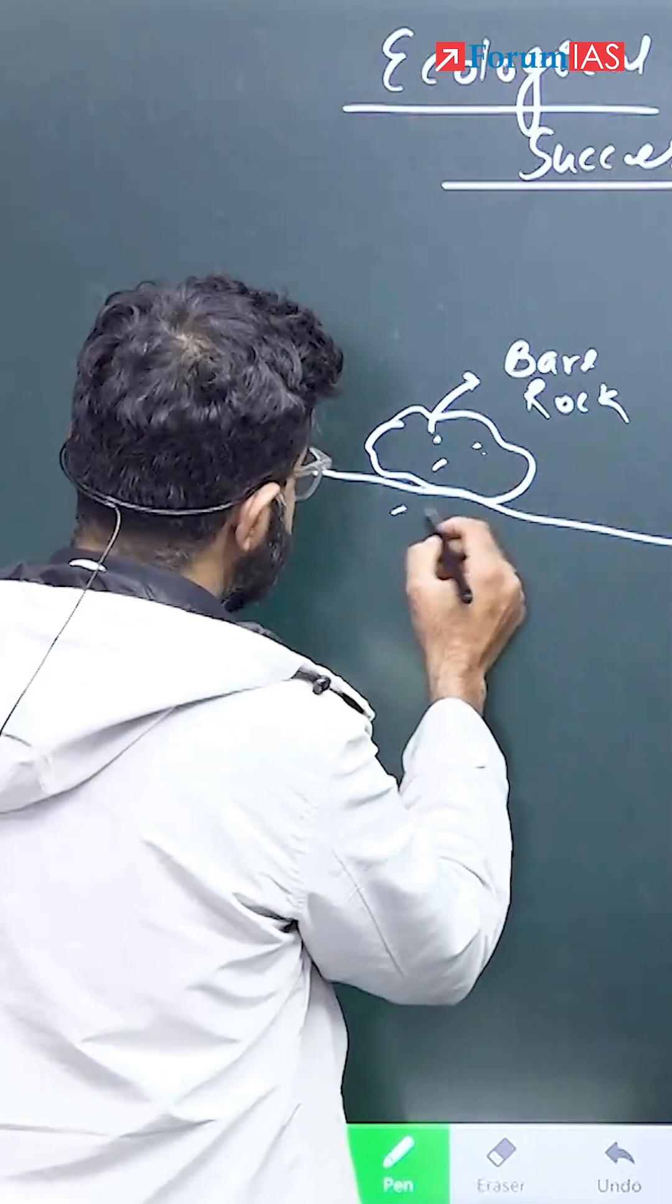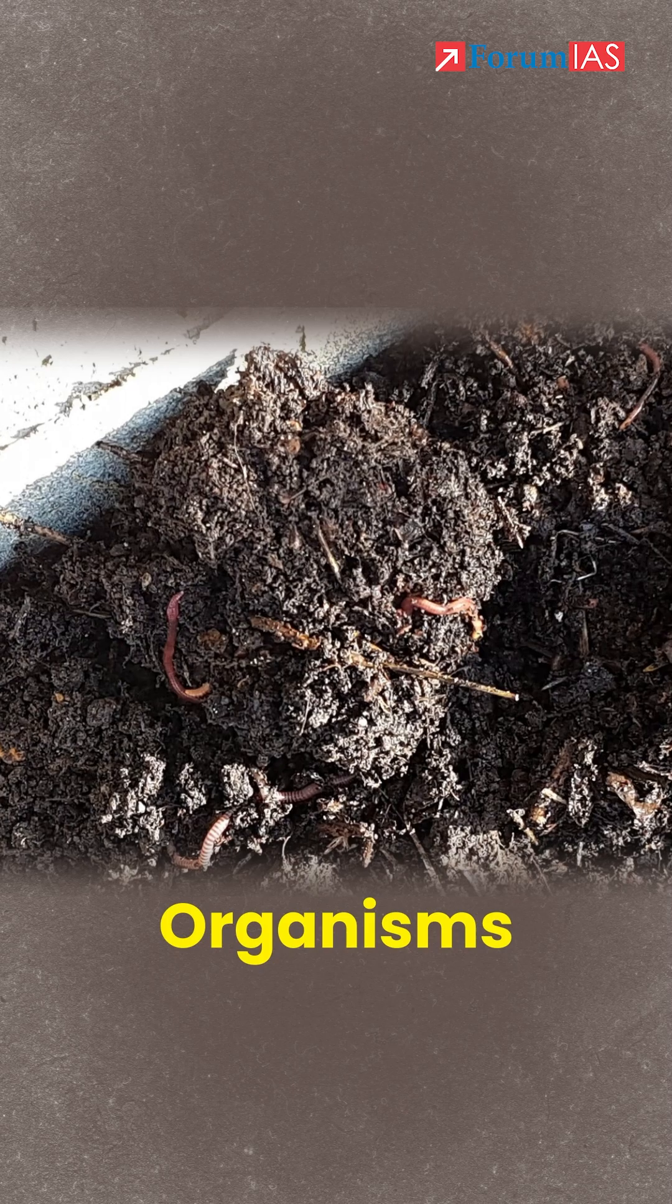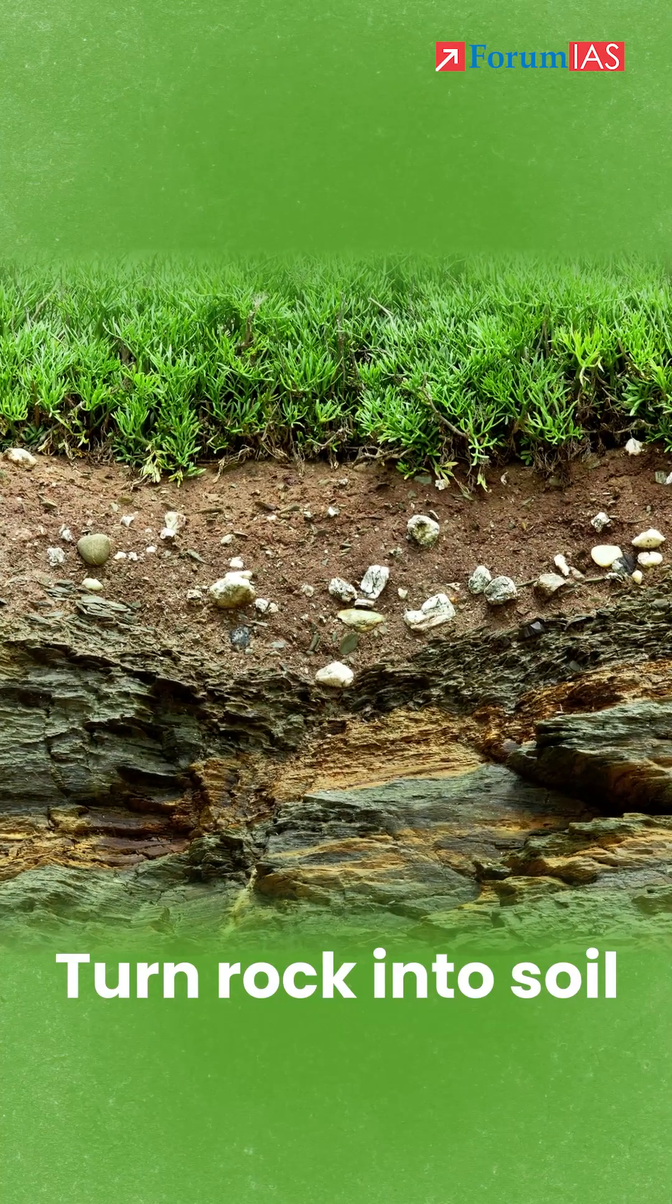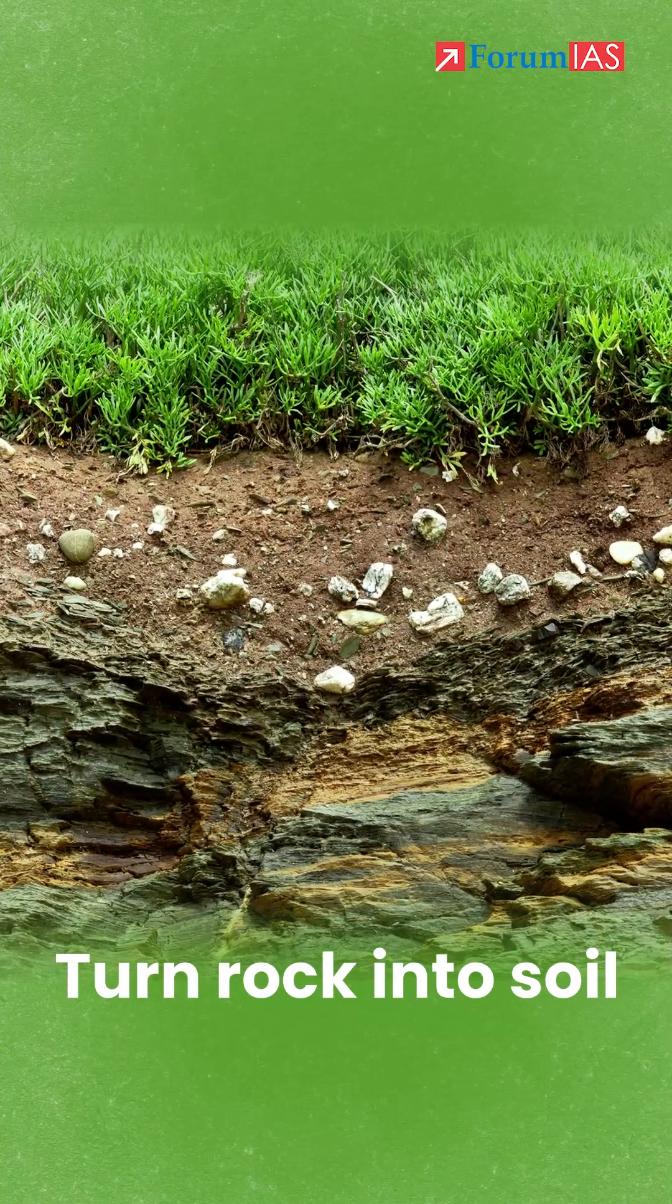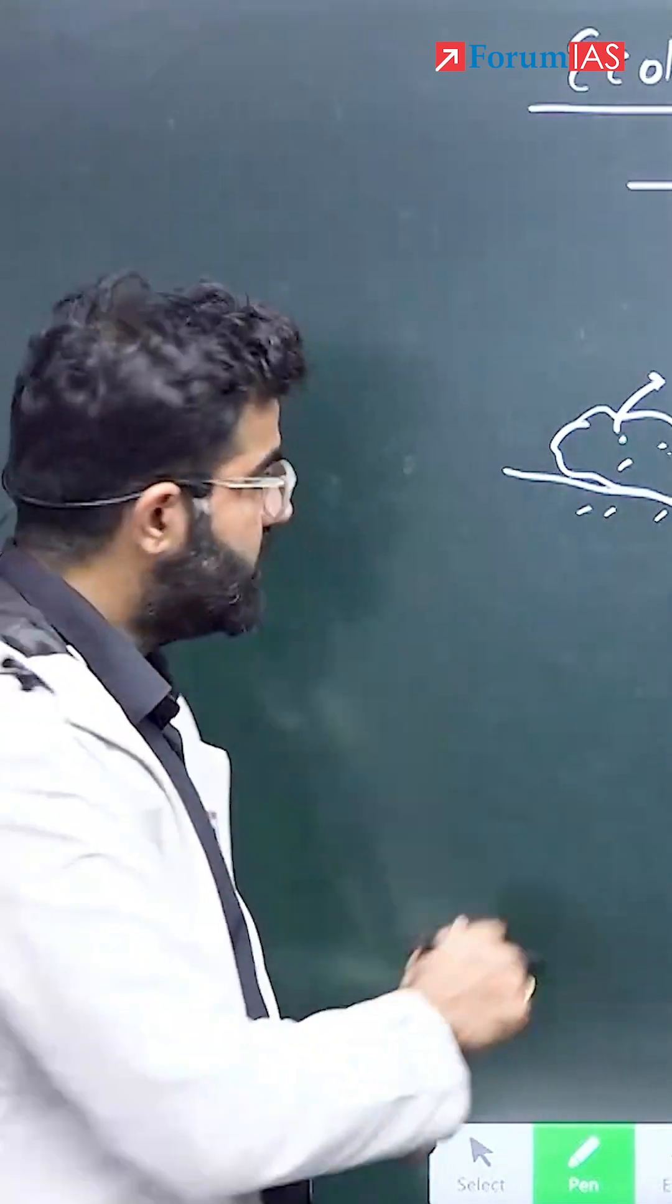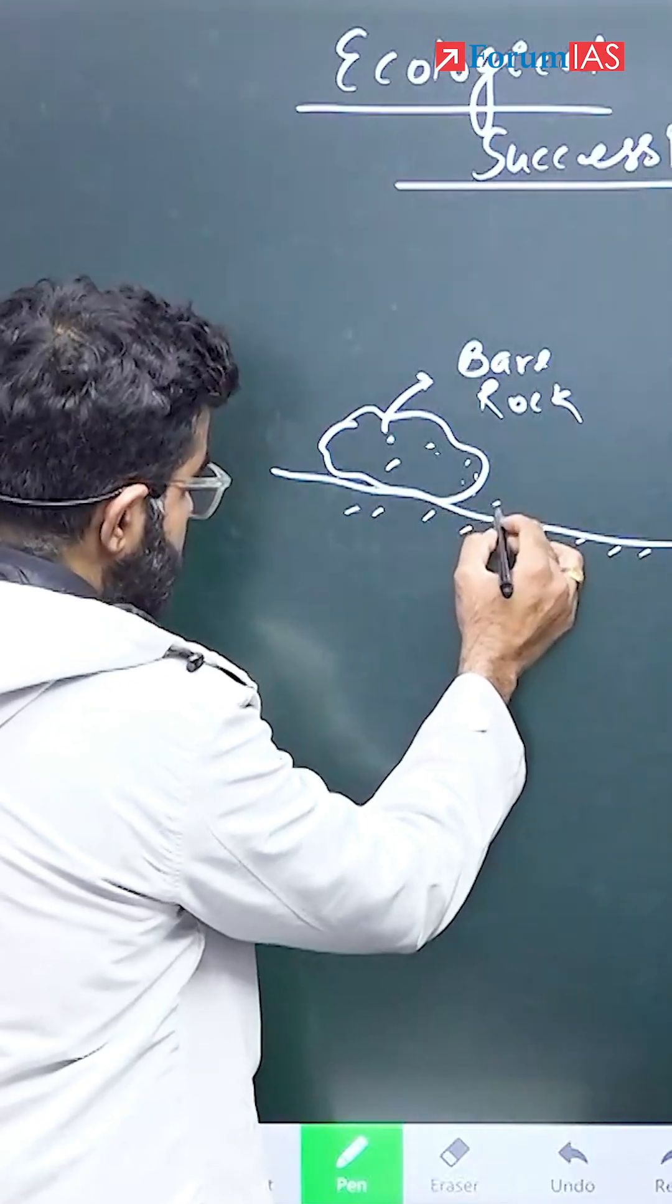Now what will happen? There are certain organisms which are found on this planet which can even turn this rock into a soil-like material. For example, the chemical leaching they will result into. They may lead to breaking of this rock.